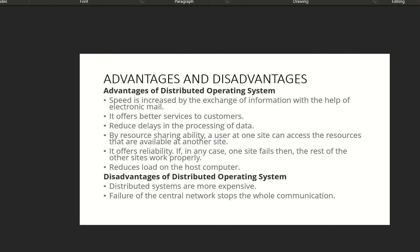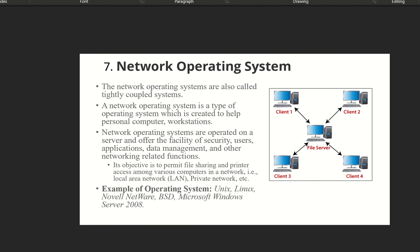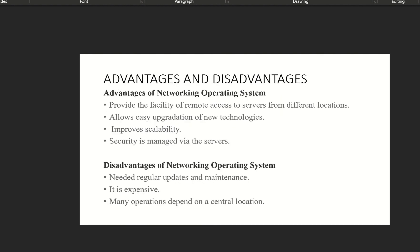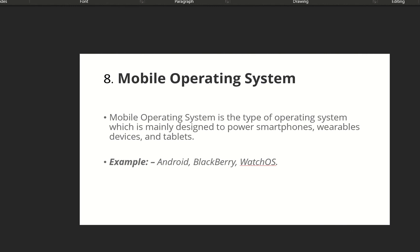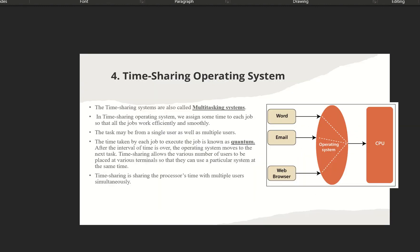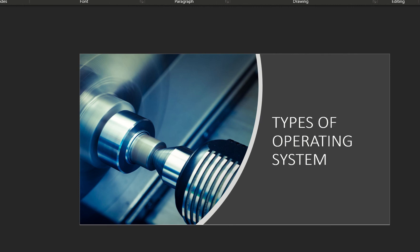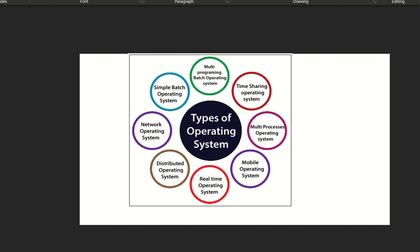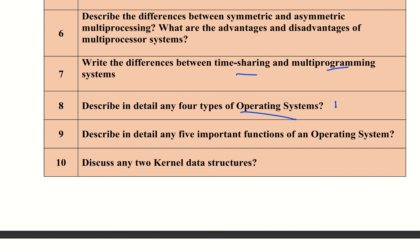For distributed operating systems, there are two types: client-server and peer-to-peer systems. Study their advantages and disadvantages. Next is network operating system and its advantages and disadvantages. Finally, mobile operating system — very familiar to us — mainly designed to power smartphones, wearable devices, and tablets. Describe in detail any four types of operating system.